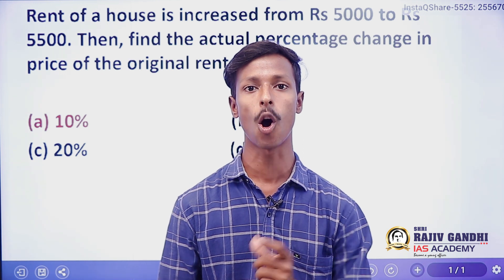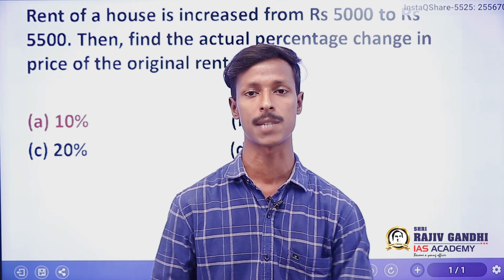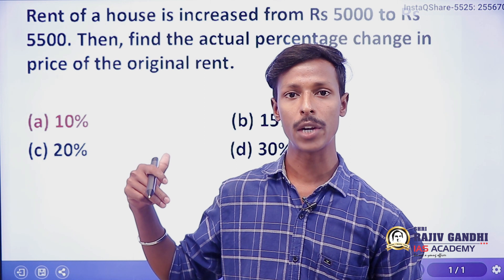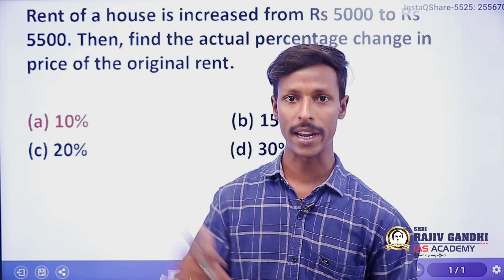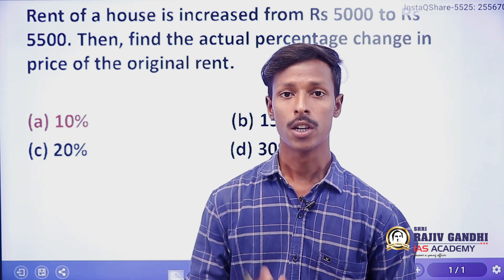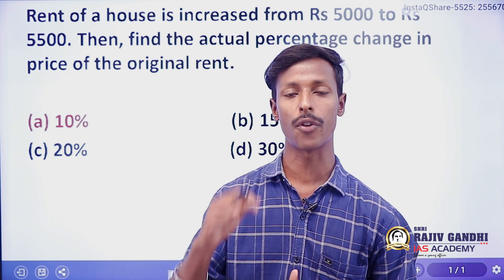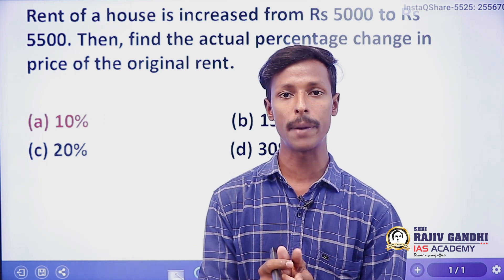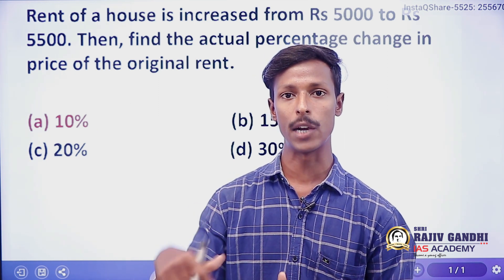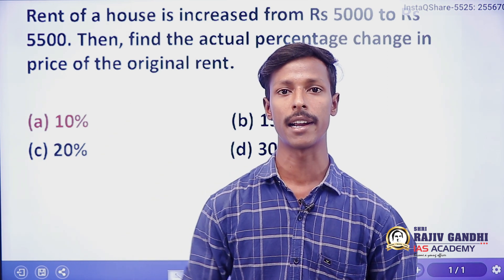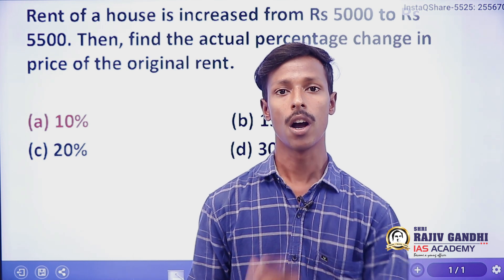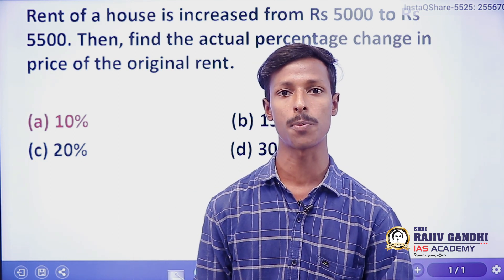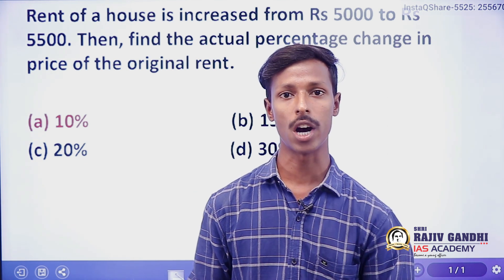The topic is percentage — how much is the model percentage. One of them is important. Initially, a V2R rent is 5,000. Further on, it increases from 5,000 to 5,500. So the original price is now increased. Let us know how much model — what percentage model. There is a formula.